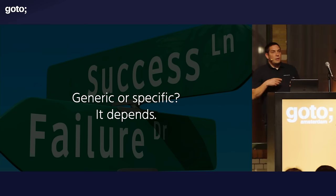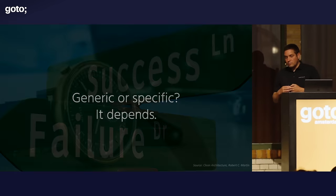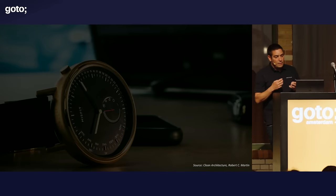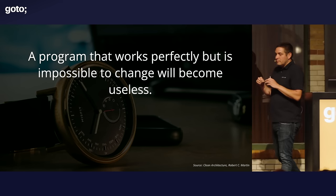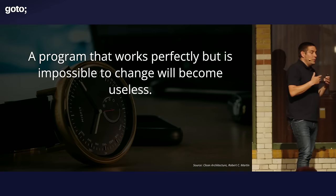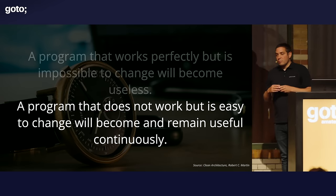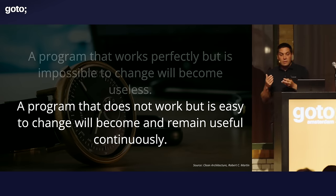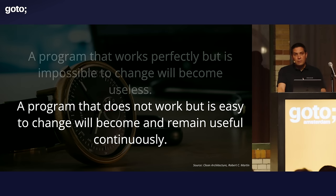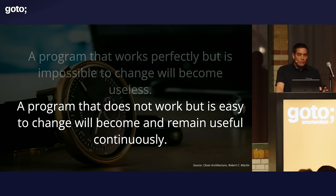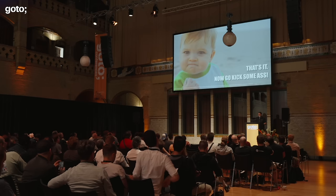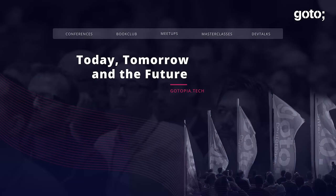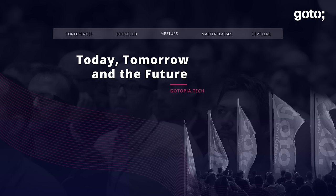In the end, it's not necessarily about getting it right from the start, but about getting it right in the end. A program that works perfectly now but is impossible to change will become useless, because you cannot change it. Whereas a program that does not work at all but is easy to change will become and remain useful continuously. Being adaptable is the key point. One piece of advice I hope will stick: write simple code. That's it. Please go kick some ass with your new knowledge. Thank you.